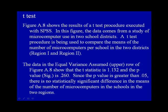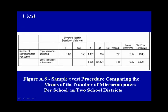The data in the equal variance assumed row of Figure A.8 show that the t-statistic is 1.132, and the p-value or significance is 0.260. Since the p-value is greater than 0.05, there is no statistically significant difference in the means of the number of microcomputers in the schools in the two regions.